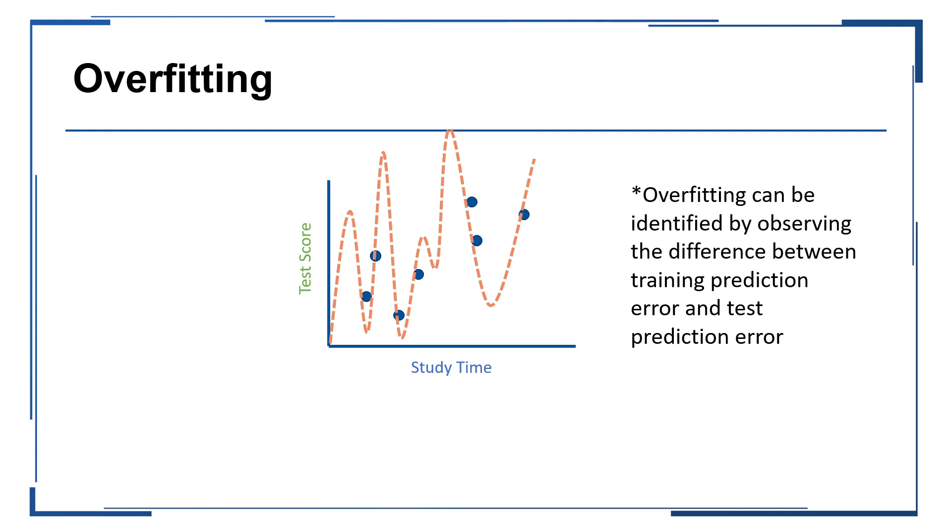We can measure overfitting by observing the difference between the model's prediction error when applied to the training set as compared to the model's error on a test set or a validation set. The larger the difference between these performance metrics, say if the model does really well on the training, but then doesn't generalize when given holdout data, it's more likely in that case that the model is overfitting.